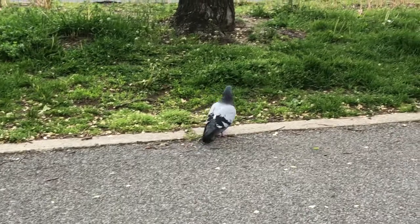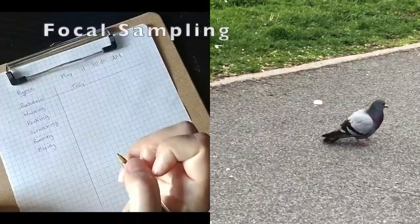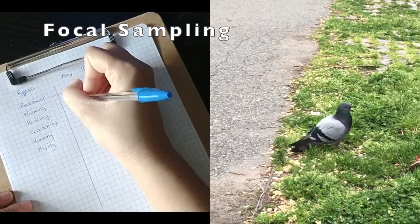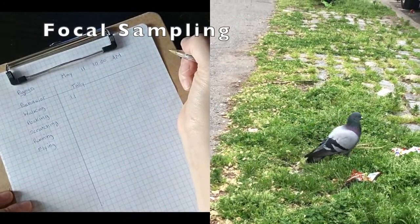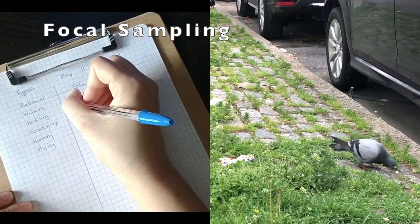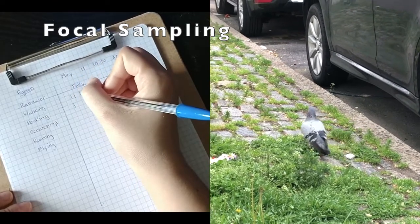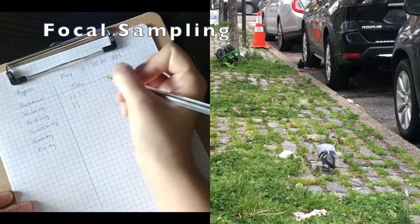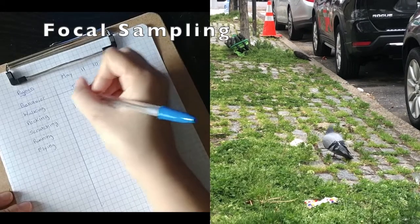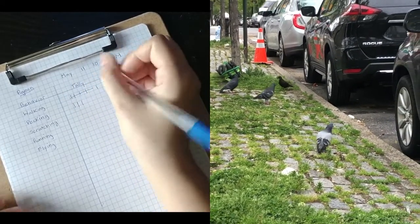We'll show an example of how an activity budget may be made for a pigeon. For this example, we'll use a technique called focal sampling, which will have us record what the pigeon does continuously for a certain amount of time. You could either record the start and end times of each behavior, or you could decide that every 15 seconds you will note which behavior is being performed. The value of this kind of sampling is that it can be used to create activity budgets for an animal that let you know how an animal uses its energy throughout the day.